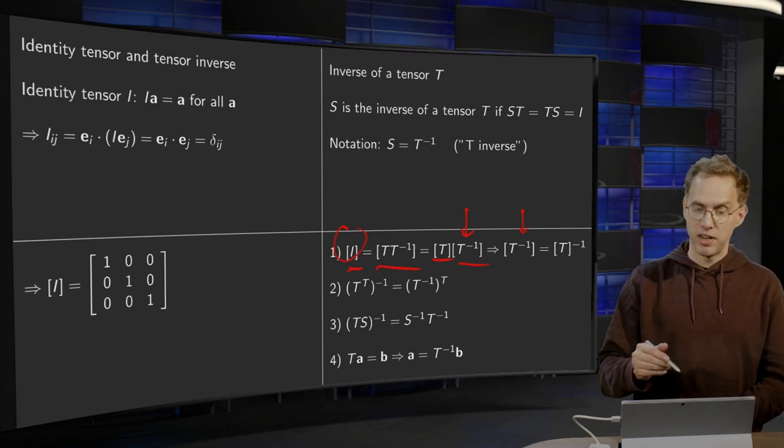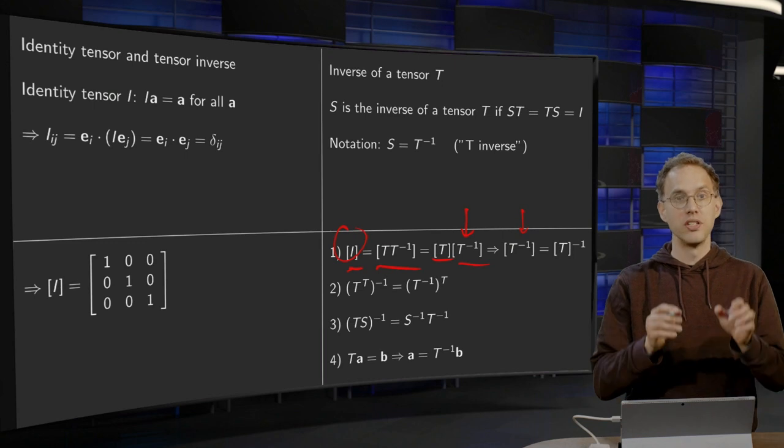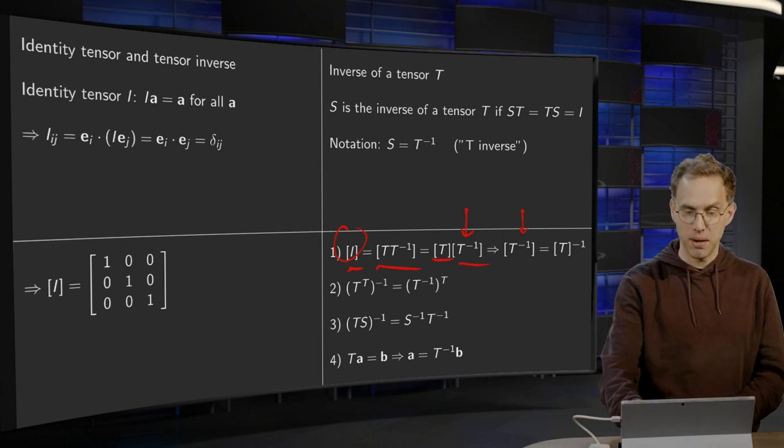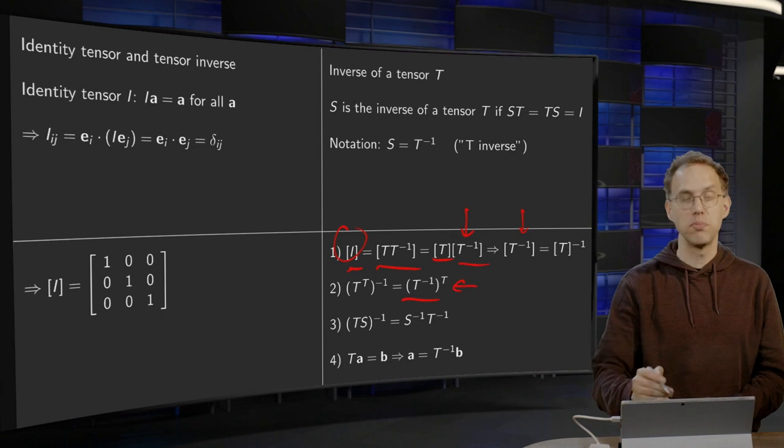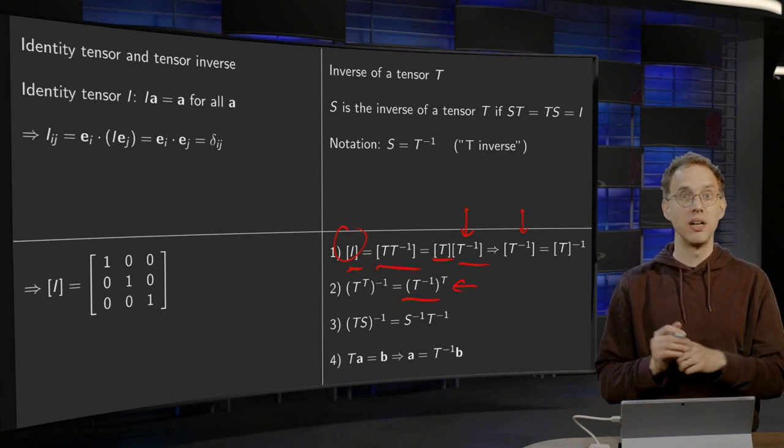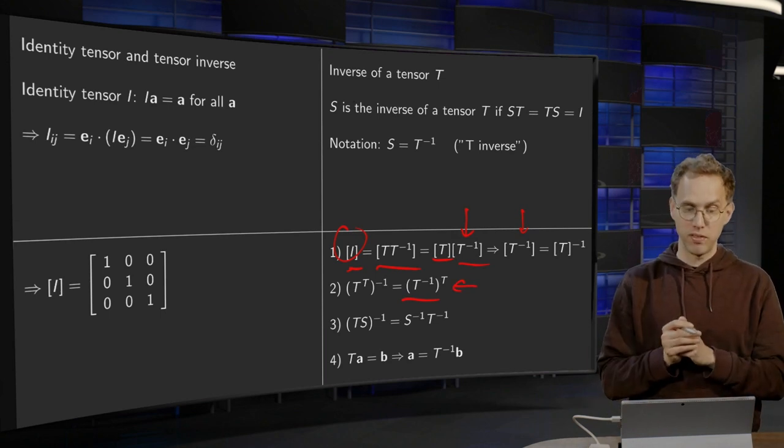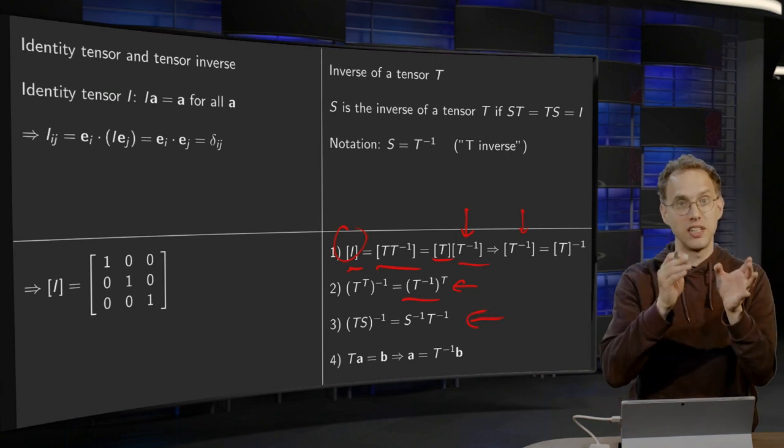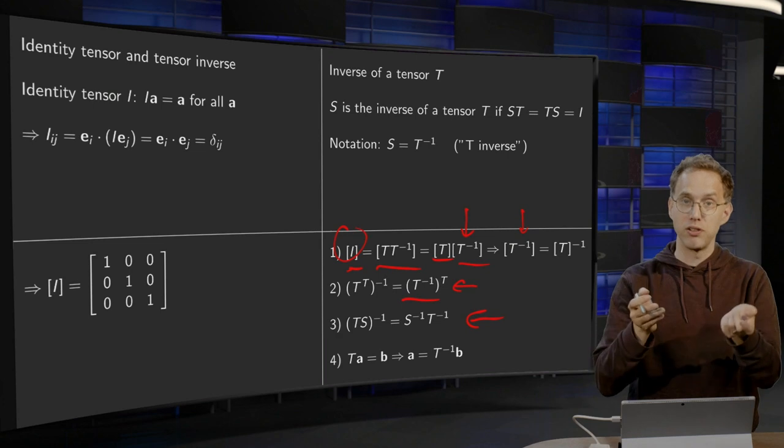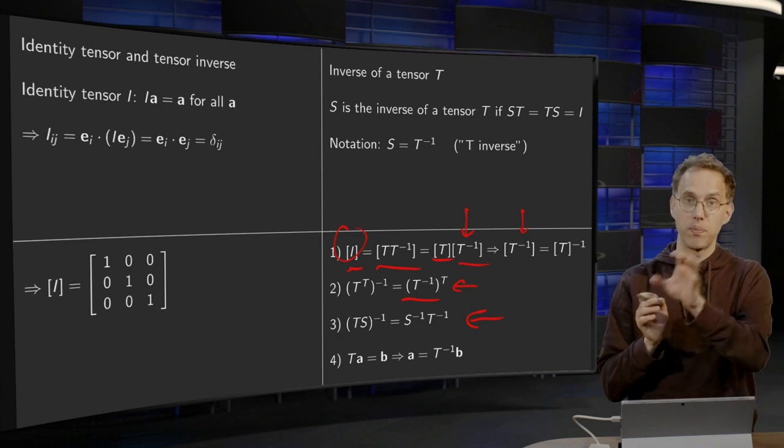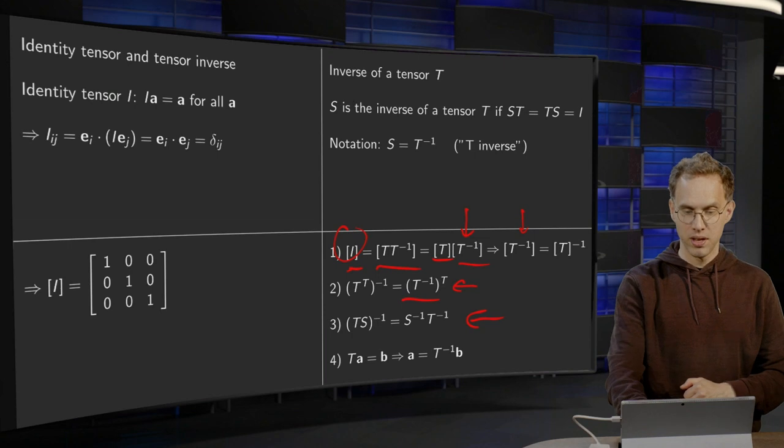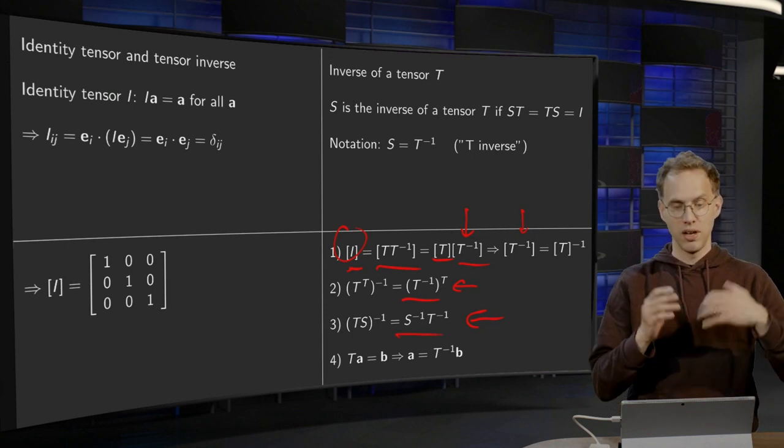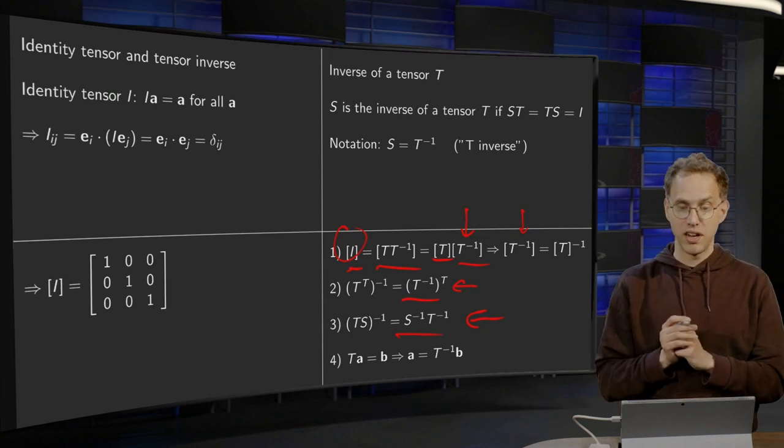Also, the other familiar rules hold. If you take the transpose first and then invert, it's the same as inverting first and then taking the transpose. This works the same as with matrices. And if you take a product T times S inverse, you take the inverses of the parts of the product but in the opposite order: S inverse times T inverse. Again, just as with linear algebra.